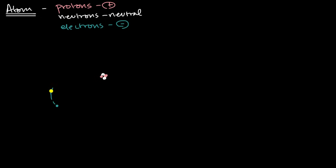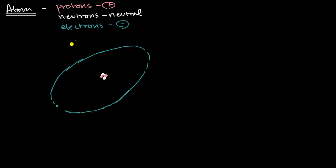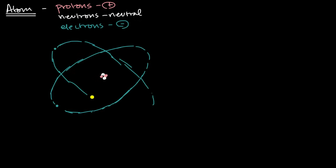So maybe one electron has an orbit that looks something like that. And then another electron — if you're talking about a neutral helium atom, you'd have two electrons and two protons — maybe the other one orbits something like this. And so this is the idea that the electrons are in orbits.